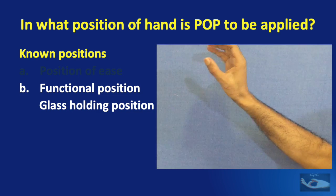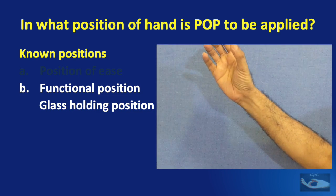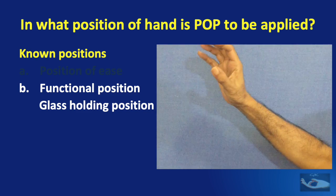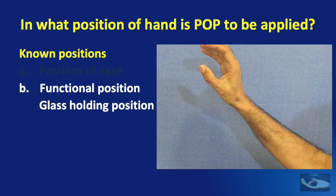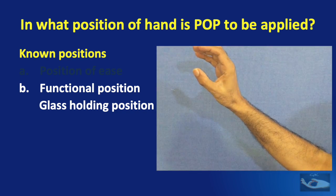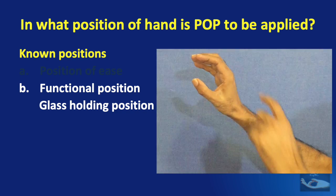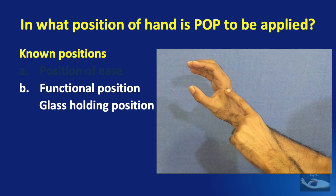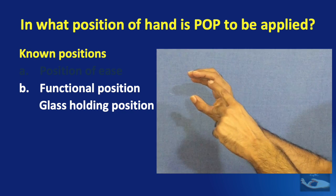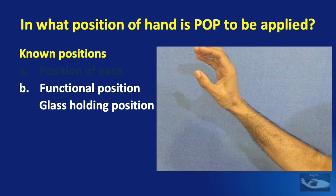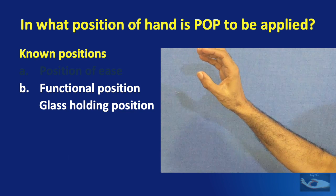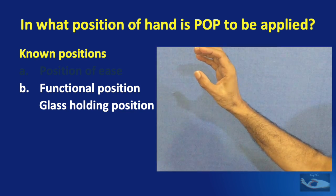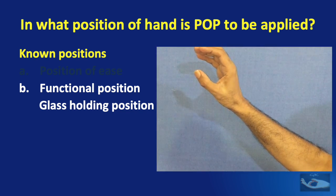The next position to consider is the functional position or sometimes known as the glass holding position. The position of the wrist is in minimal extension of about 10 degrees. The metacarpophalangeal joints are kept flexed at around 60 degrees and the interphalangeal joints are kept flexed. The thumb is kept in a position of palmar abduction. This position is a very safe position in which to apply a POP in a case of a major injury to the hand.